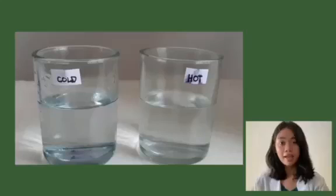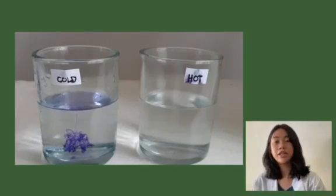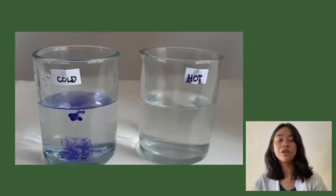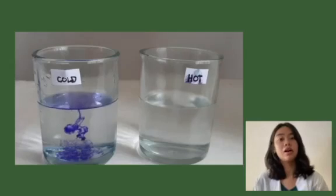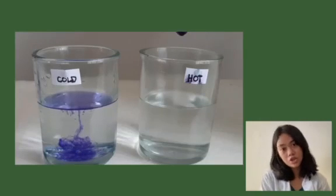For setup A, I observed that there is a significant difference in how the ink or the color moves through the different temperatures. This is an example of diffusion. Diffusion is the process of scattering the molecules from a greater concentration to a lesser concentration.